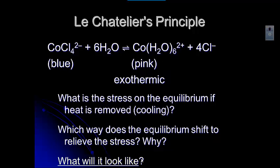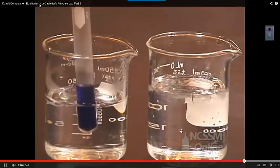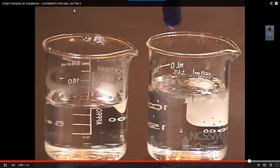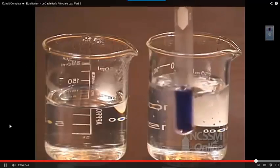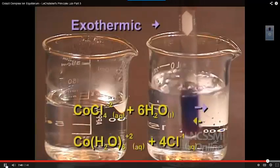Let's look at the stress on the equilibrium if heat is removed. Since heat is on the product side for this exothermic reaction, removing heat means we've decreased the amount of heat in the equilibrium system on the product side. To relieve that stress, the reaction shifts to the right to create more heat. Cooling the reaction mixture shifts the equilibrium in the exothermic direction — we notice the solution goes from blue to pink, indicating that the reaction is exothermic in the forward direction.